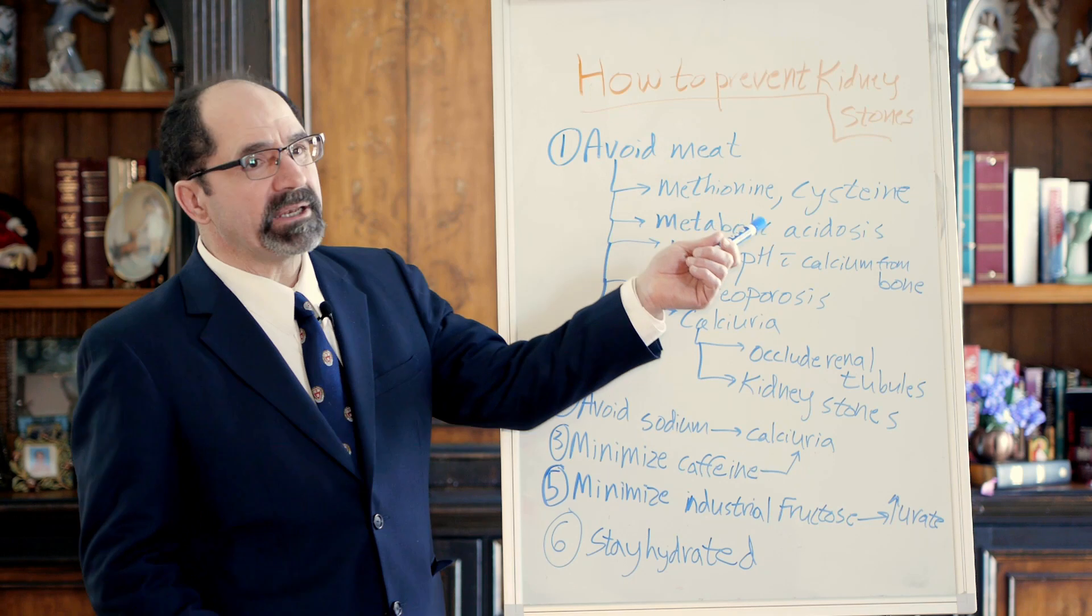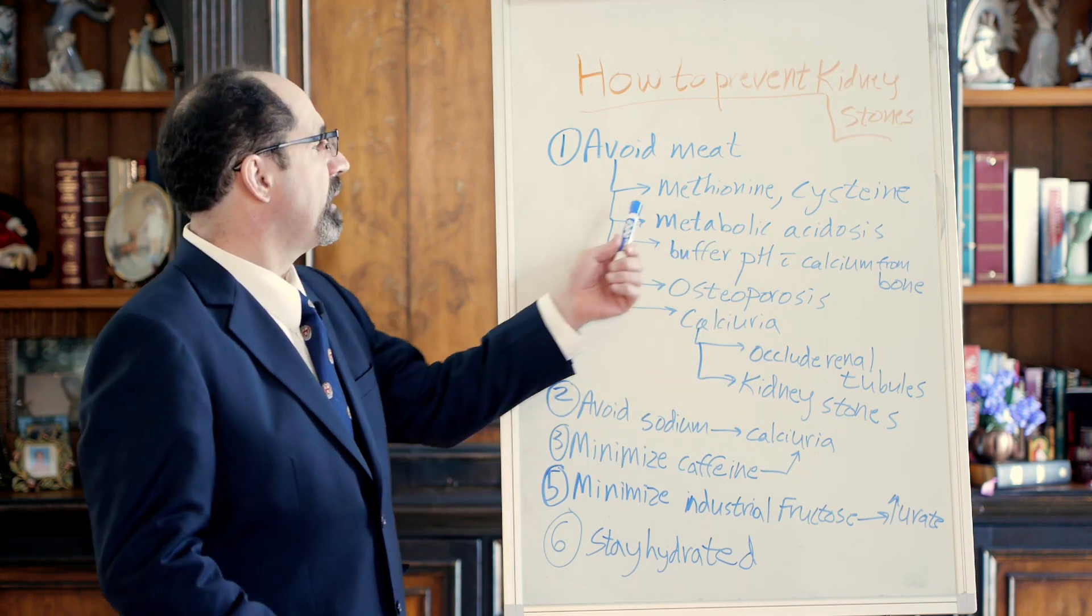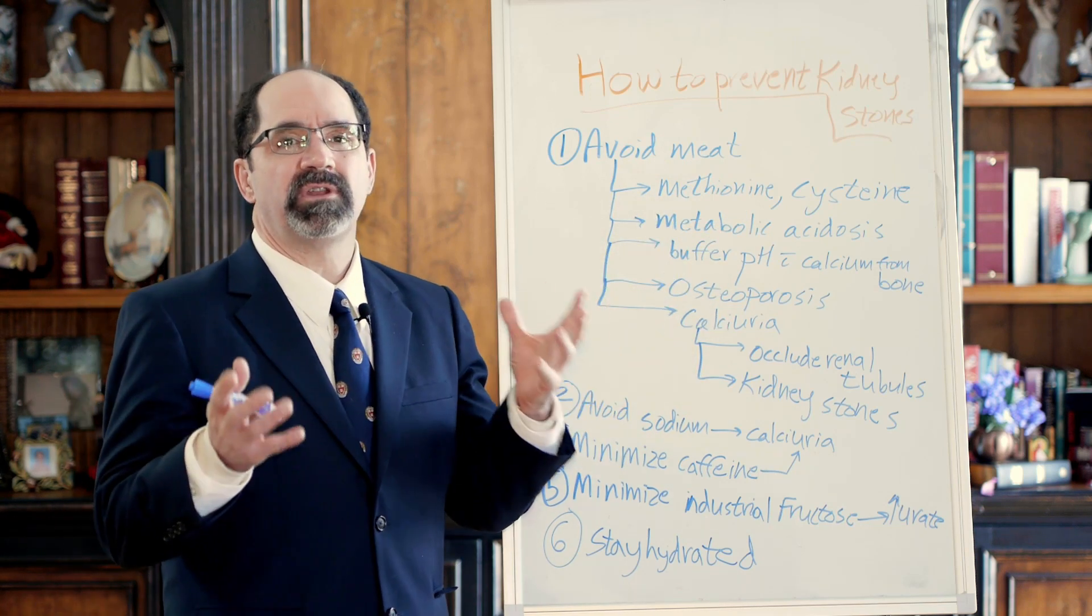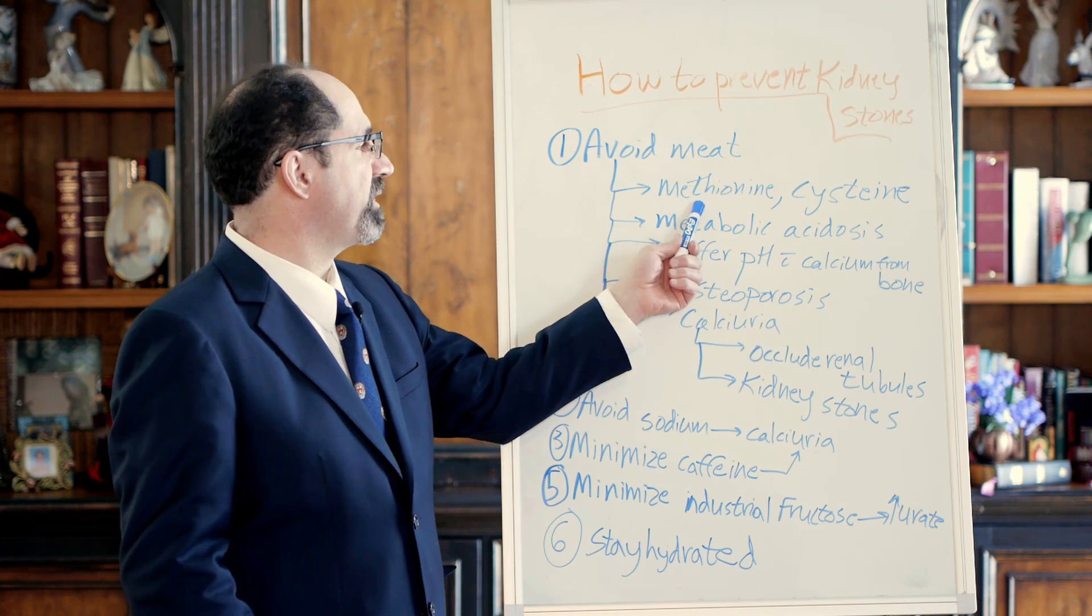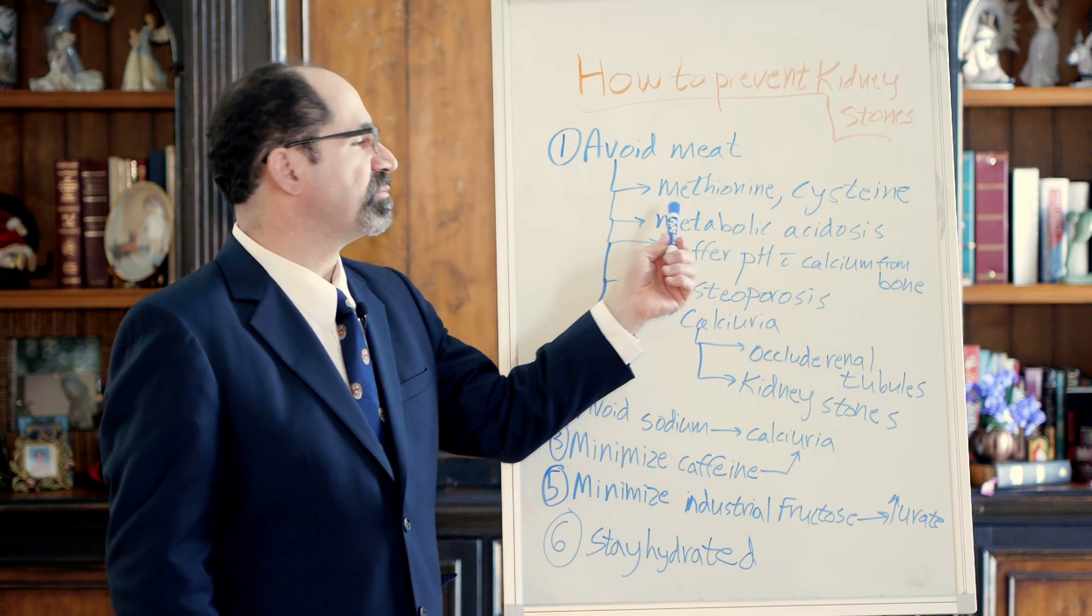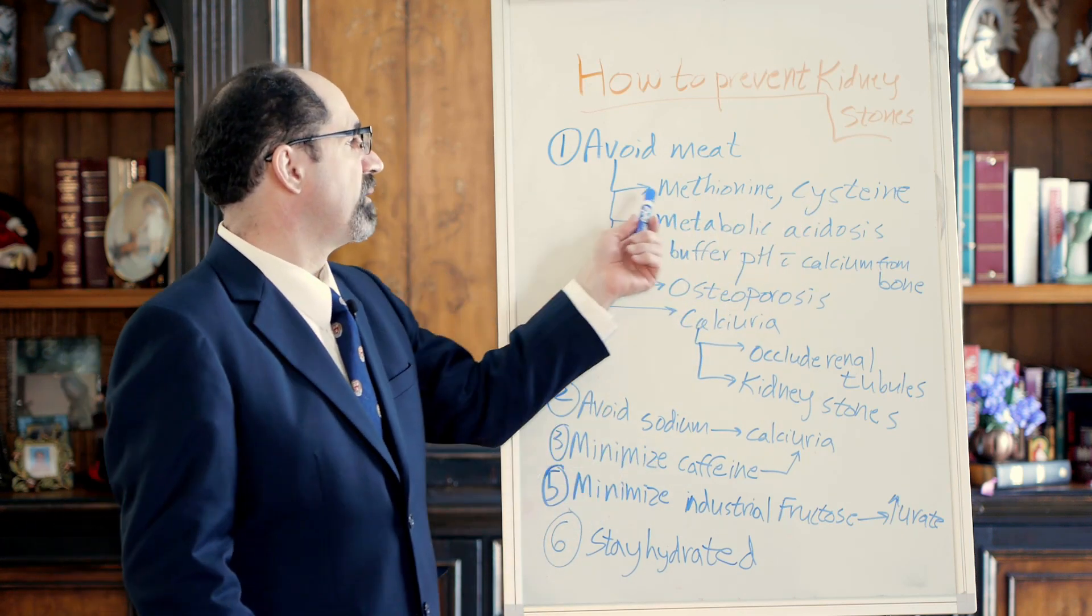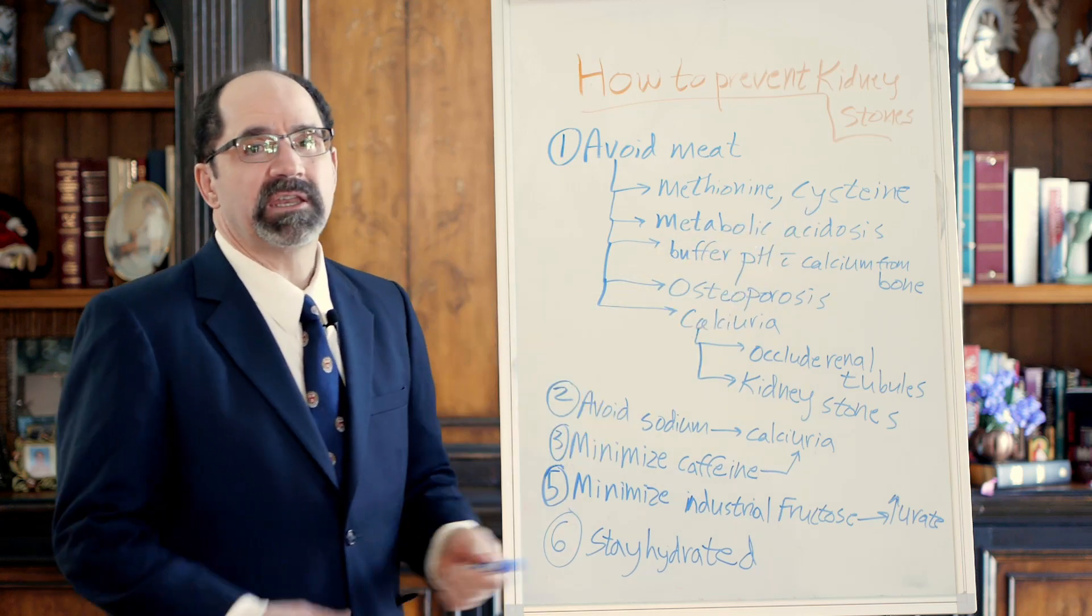First thing I'm going to recommend, avoid eating meat. What's the deal with meat? Meat contains a unique composition of amino acids. It has a lot of methionine and cysteine, much more so than plant foods. Methionine and cysteine are sulfur-containing amino acids.